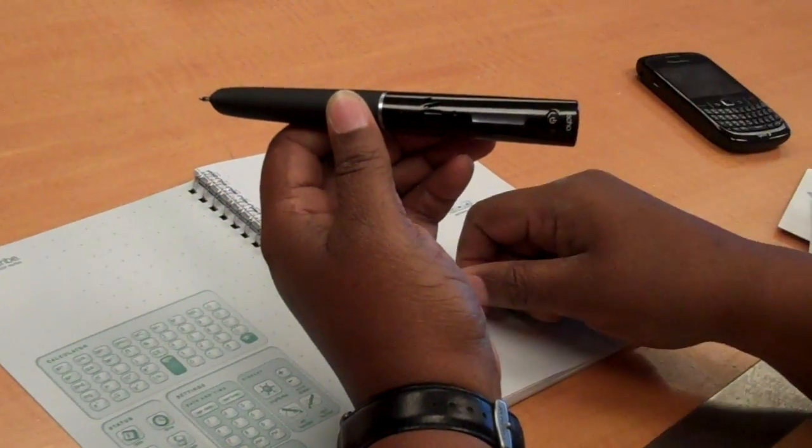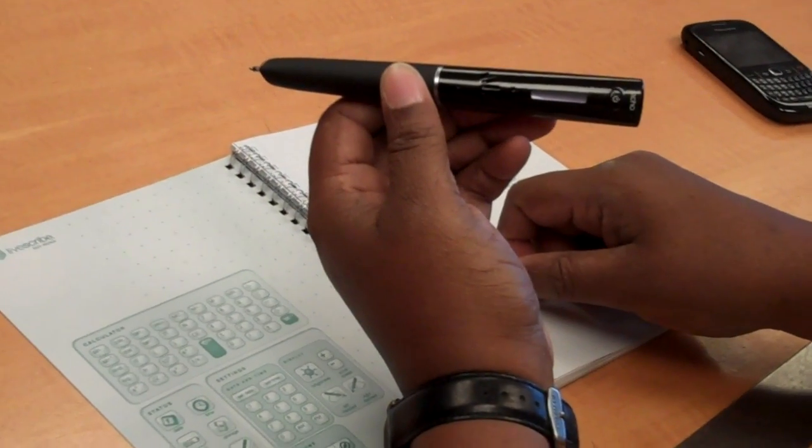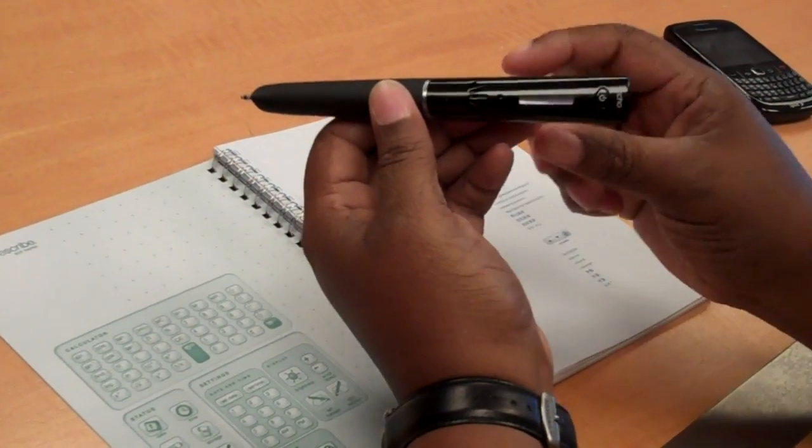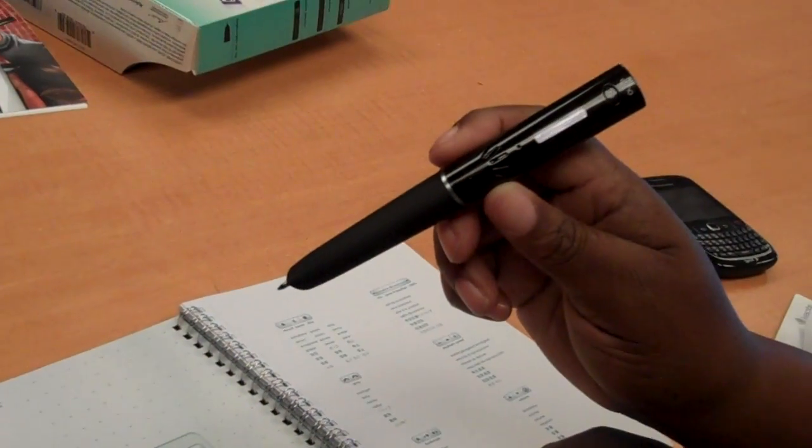For more information, log on to cbs5.com/baseSunday, then click on show information, then click on Echo SmartPen.